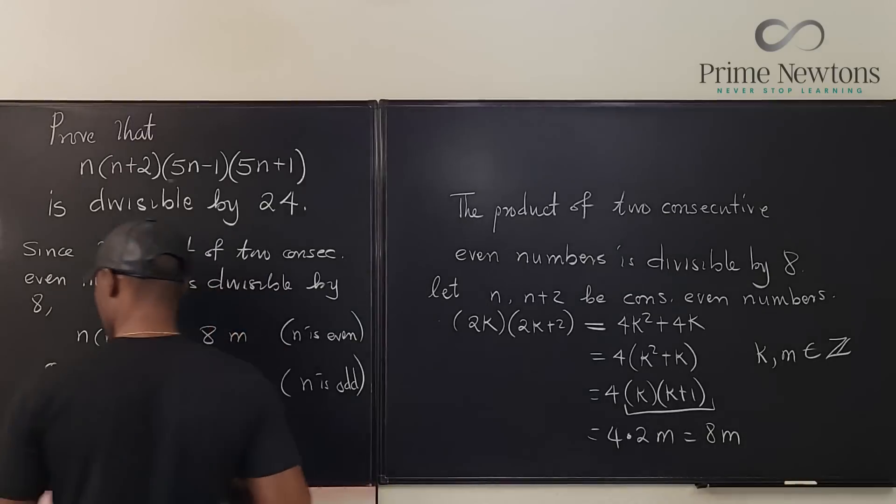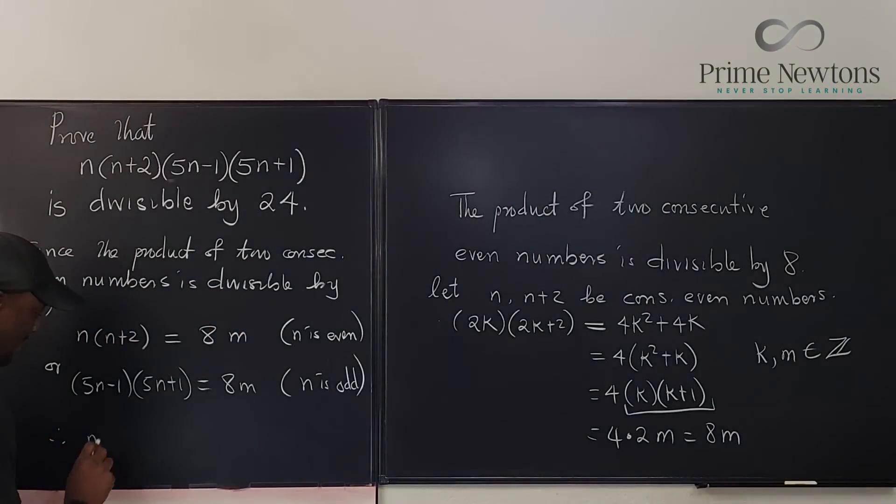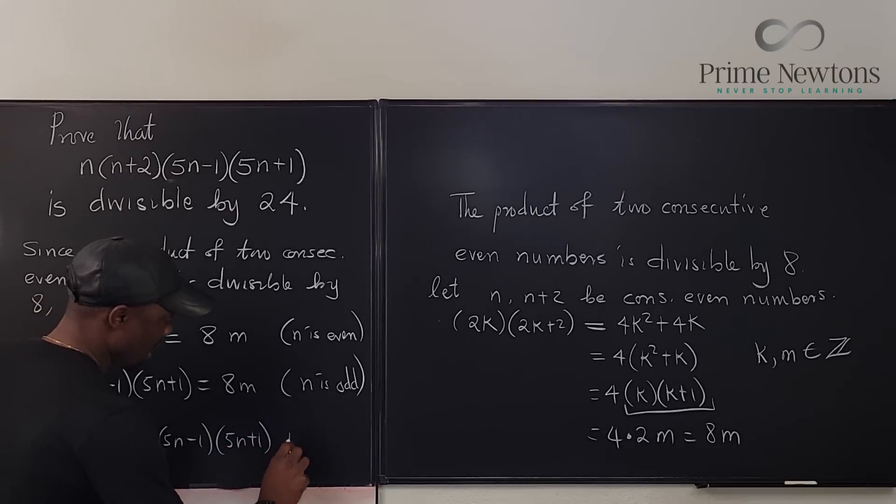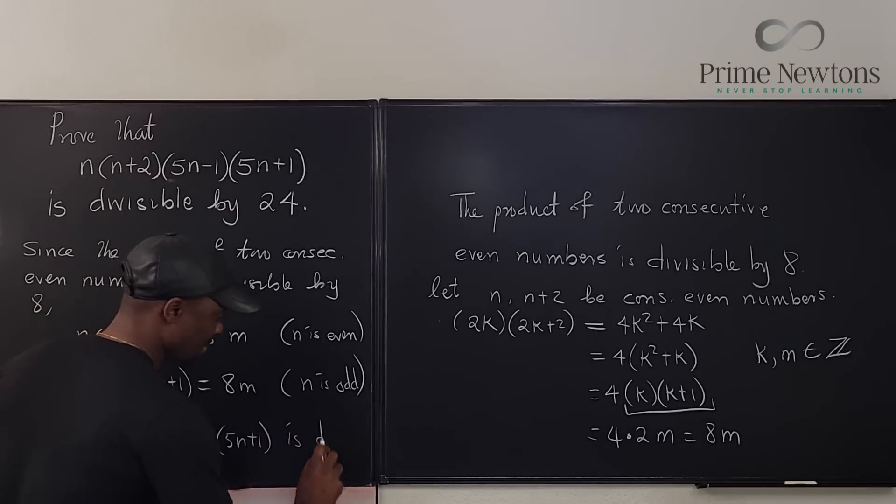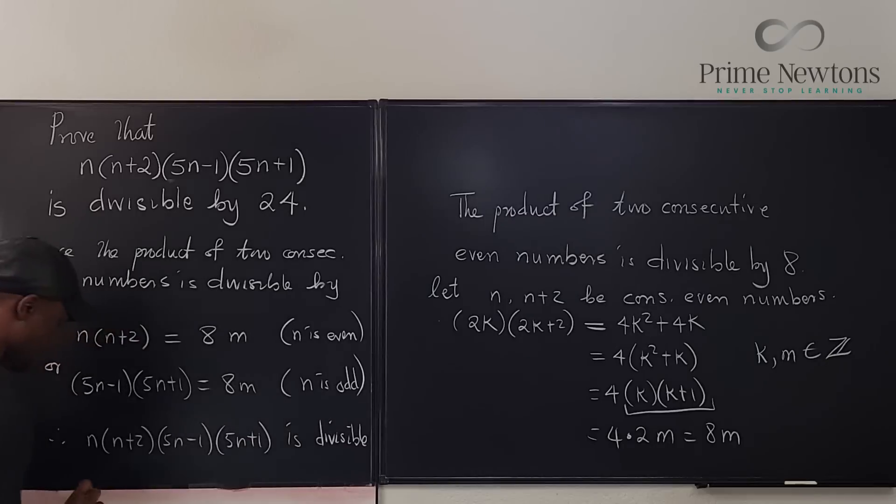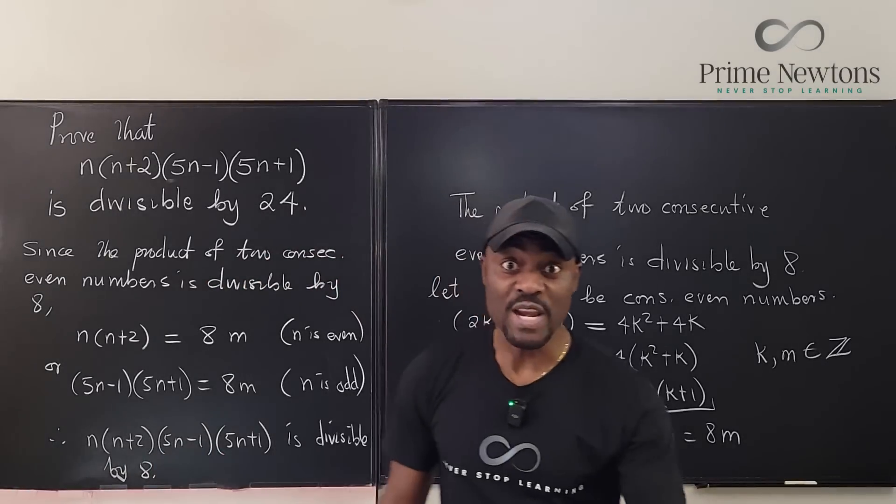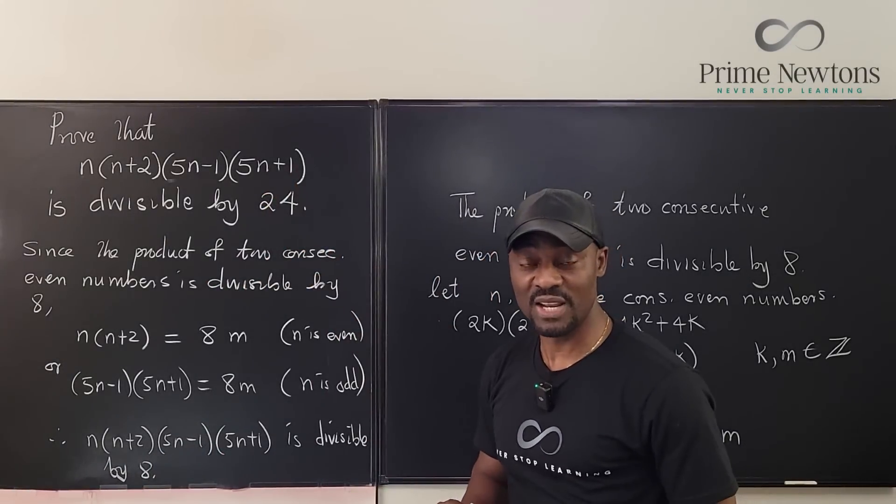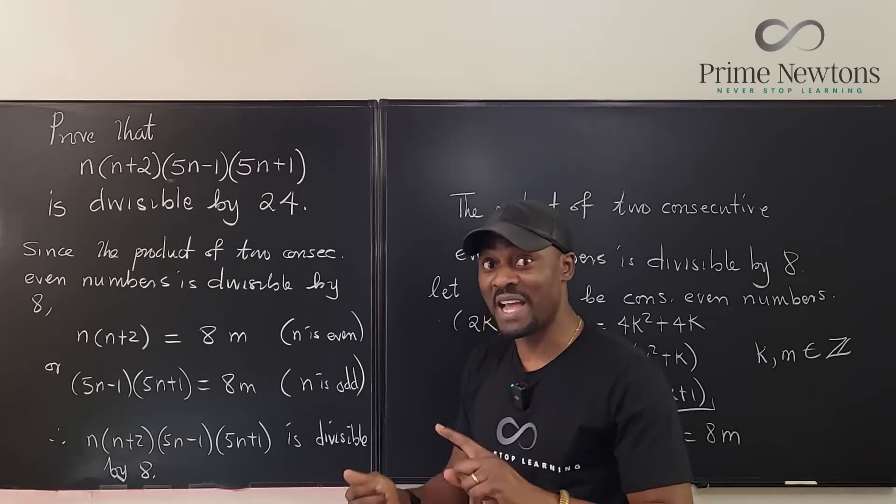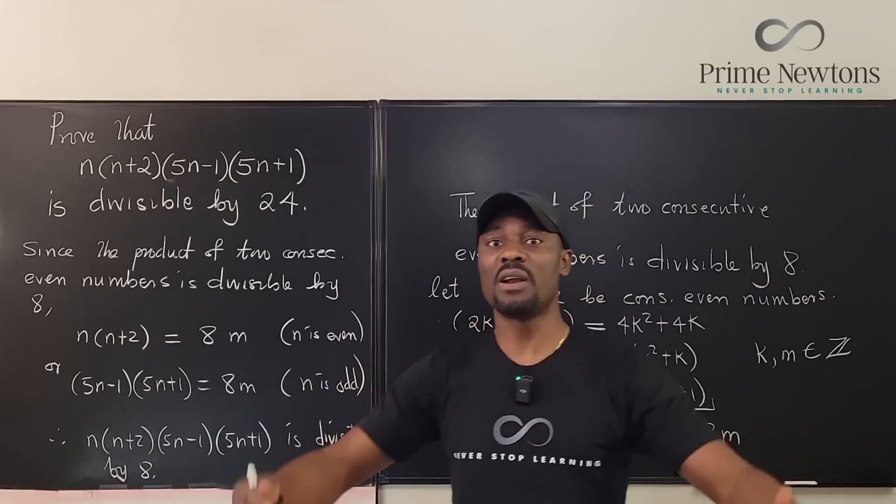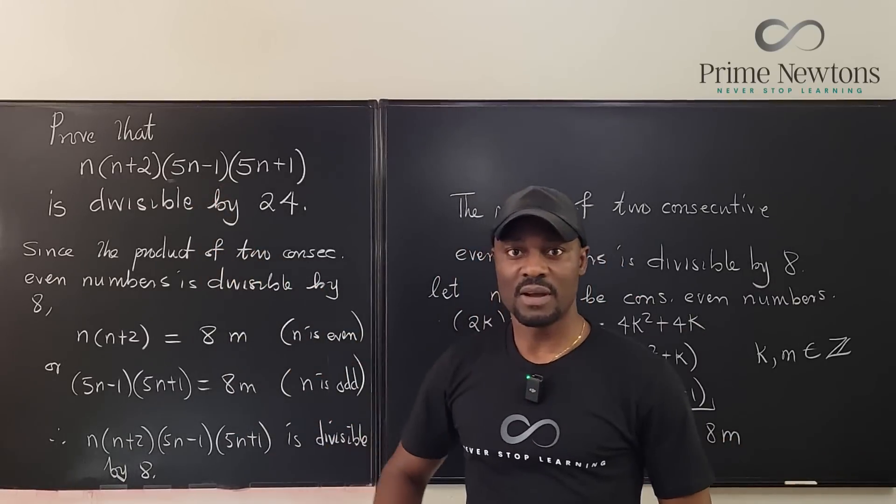So we have shown, therefore, n into n plus 2 into 5n minus 1, 5n plus 1 is divisible by 8. Now we need to show that this is divisible by 3, because if we can show it's divisible by 8 and divisible by 3, and 8 and 3 are relatively prime, then their product is also a factor.